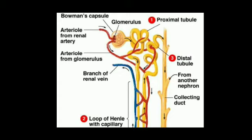Amino acids are the basic units of proteins. So the selective substances that are not harmful for our body, like glucose, salts and amino acids, get absorbed into the U-shaped tubule. The basic function of the U-shaped tubule is selective absorption of substances.